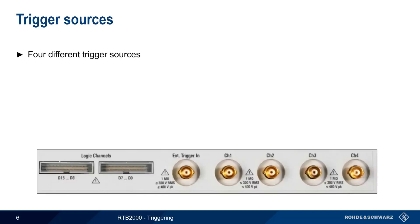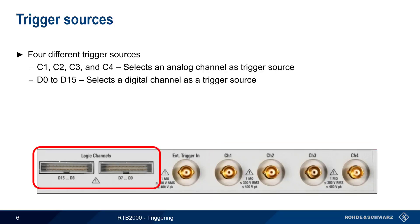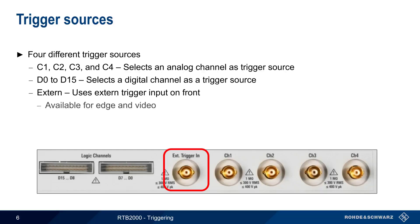There are four different trigger sources available on the RTB2000. The most common sources are one of the four analog channels. Another possible trigger source are any of the 16 digital or logic channels. In some cases, it can be useful to have an external trigger signal, which is connected to the RTB using a separate BNC connector on the front of the instrument. Note that external triggering is only available for trigger types edge and video. We will discuss these shortly.